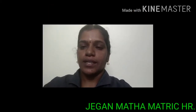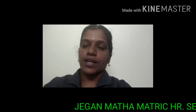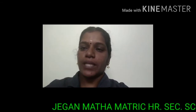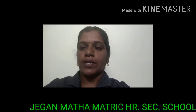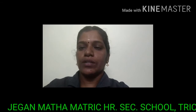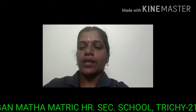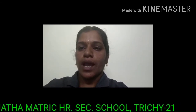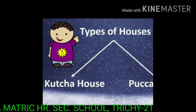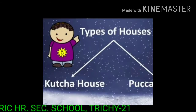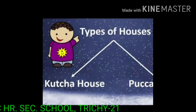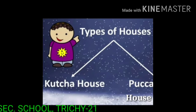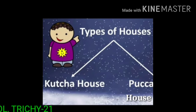Hi students, in last class we learnt many types of houses, but today we are going to learn two main houses. They are Pukka house and Kacha house. We can find different sizes and different shapes of houses around us. So the two main types of houses are Kacha house and Pukka house.